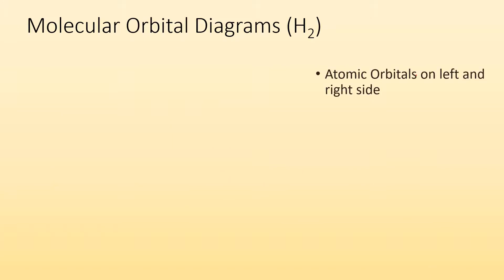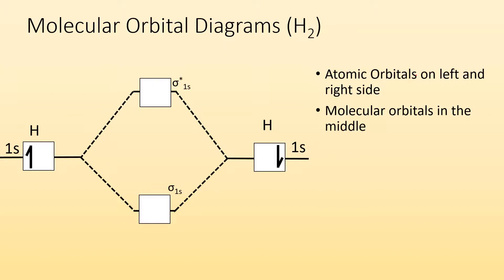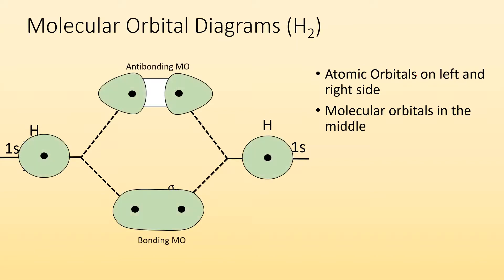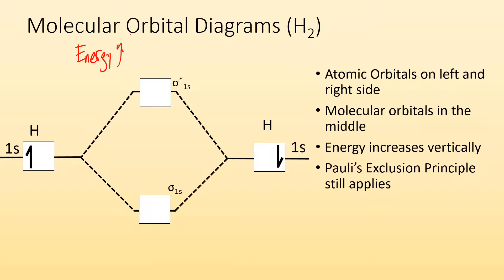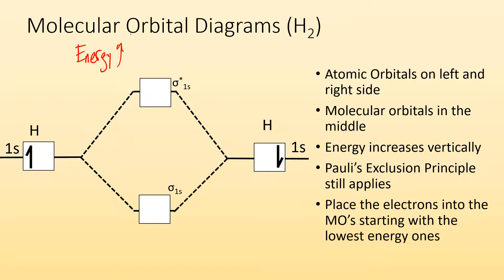For molecular orbital diagrams, you start with atomic orbitals on the left and right side. For hydrogen, it's 1s with one electron each. In the middle, you put the molecular orbitals formed when they bond. Sigma 1s goes on the bottom because it's lower energy, and sigma star 1s, the anti-bonding orbital, goes on top because it's higher energy. Energy increases vertically. Pauli's exclusion principle still applies, so we place the two electrons starting at the lowest energy orbital — one up arrow, one down arrow — and we're done.